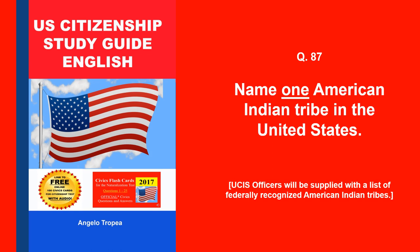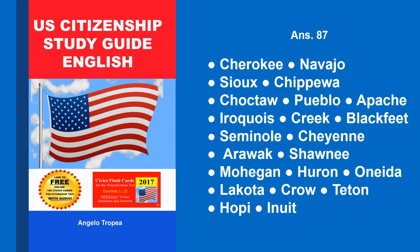Name one American Indian tribe in the United States. UCIS officers will be supplied with a list of federally recognized American Indian tribes. Cherokee, Navajo, Sioux, Chippewa, Choctaw, Pueblo, Apache, Iroquois, Creek, Blackfeet, Seminole, Cheyenne, Arawak, Shawnee, Mohegan, Huron, Oneida, Lakota, Crow, Teton, Hopi, Inuit.